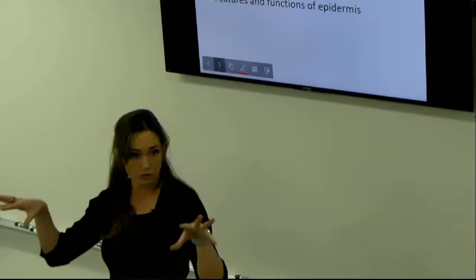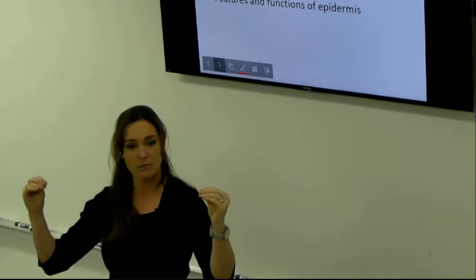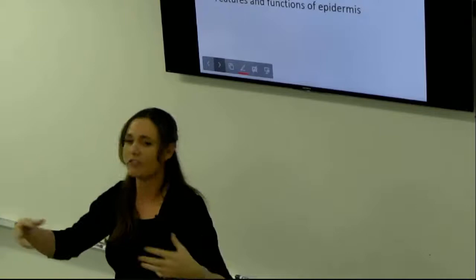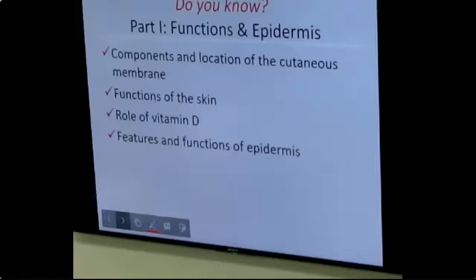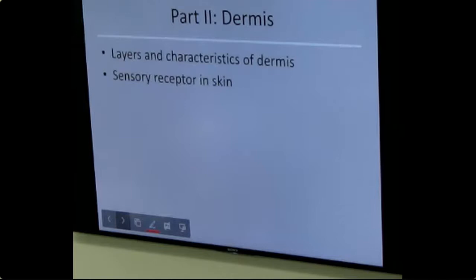At stratum spinosum, keratinocytes begin producing keratin. By stratum granulosum, they've died and keratin becomes the gel waterproof layer. Stratum lucidum thickens in high-abrasion regions. Stratum corneum flakes off, protecting us immunologically by keeping germs on dead cells. For melanocytes: everyone has the same number; it's the production level that makes melanin pigment and determines skin color variation.